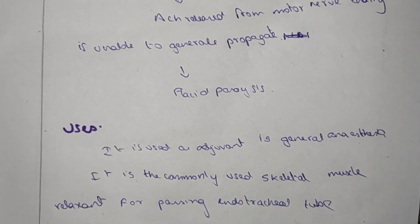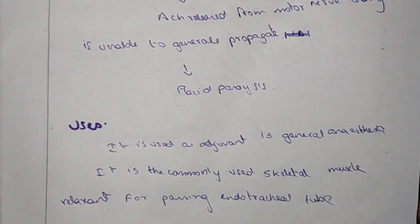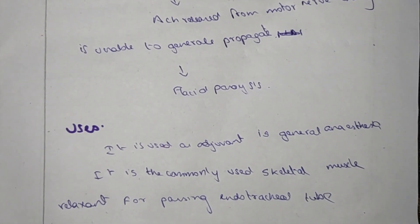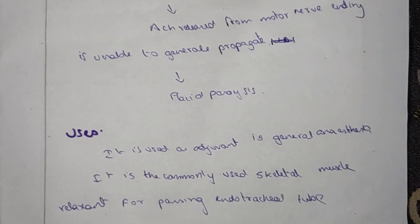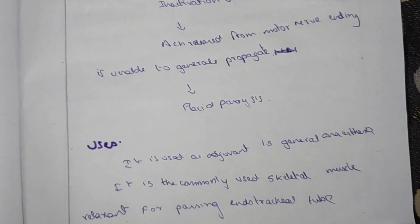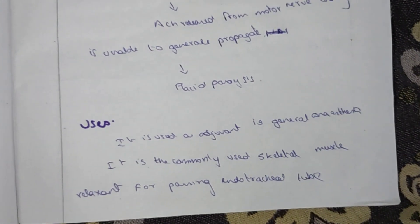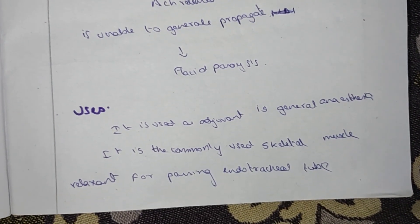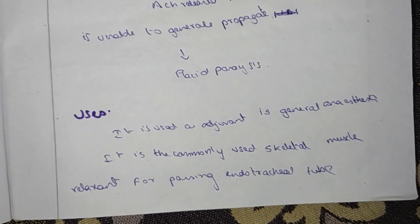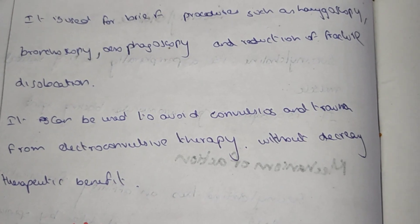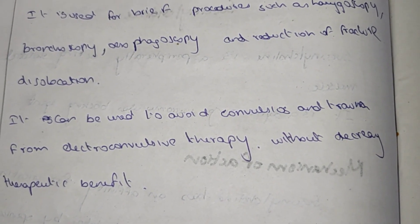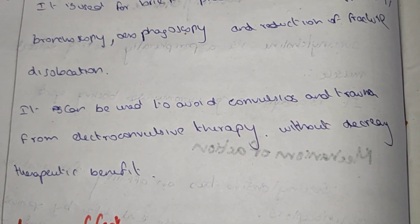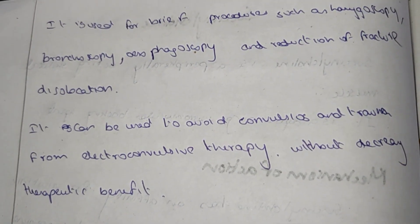The uses of succinylcholine include its use as an adjuvant in general anesthesia. It is commonly used as a skeletal muscle relaxant for passing an endotracheal tube. It is also used in procedures such as laryngoscopy, bronchoscopy, esophagoscopy, and reduction of fractures.